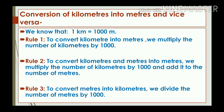Now let's see the conversion of kilometres into metres and vice versa, knowing that 1 kilometre equals 1000 metres. Rule 1: to convert kilometres into metres, multiply the number of kilometres by 1000. Rule 2: to convert kilometres and metres into metres, multiply the number of kilometres by 1000 and add the number of metres. Rule 3: to convert metres into kilometres, divide the number of metres by 1000.